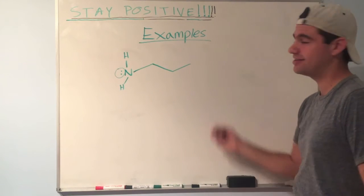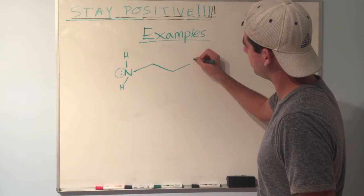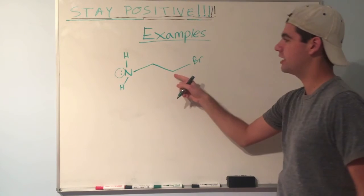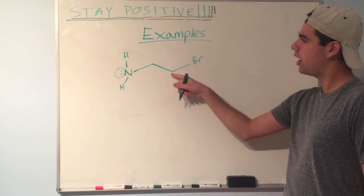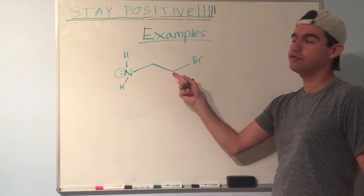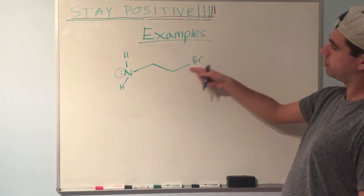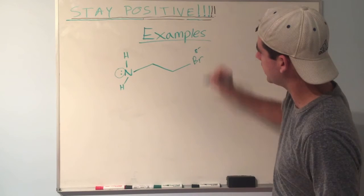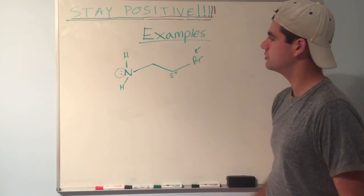So if we were to put, let's say, change it up a little bit and put, let's say, a bromine right here, which is more electronegative than carbon, what would this carbon be? Nucleophilic or electrophilic? The answer is electrophilic. Because the electron density would be pulled towards the bromine, it would get a partial negative charge, and the carbon would get a partial positive charge.